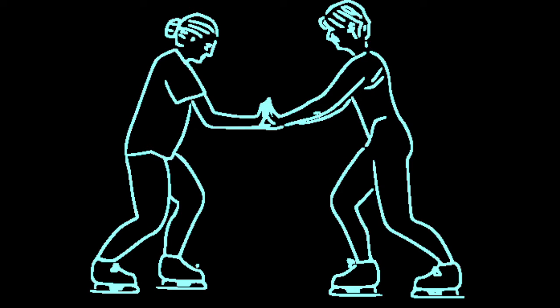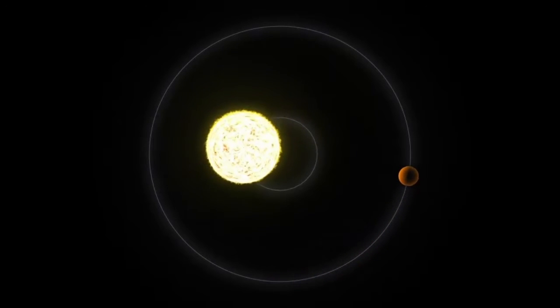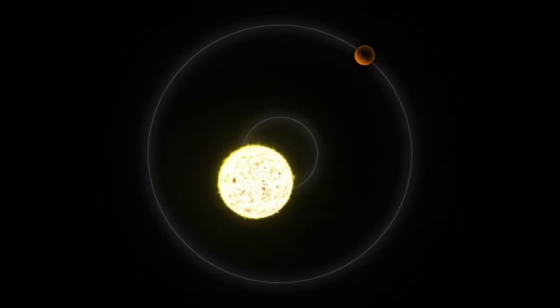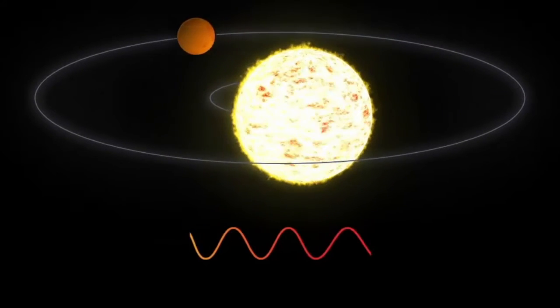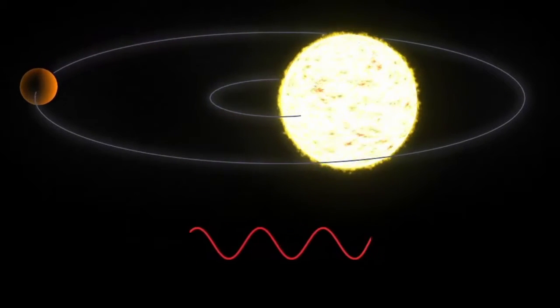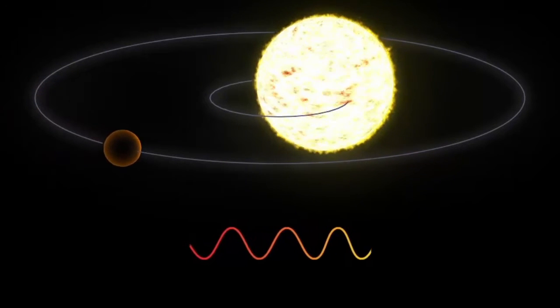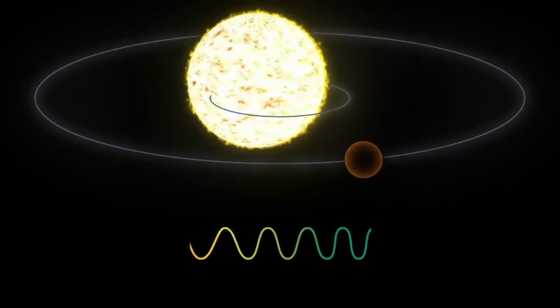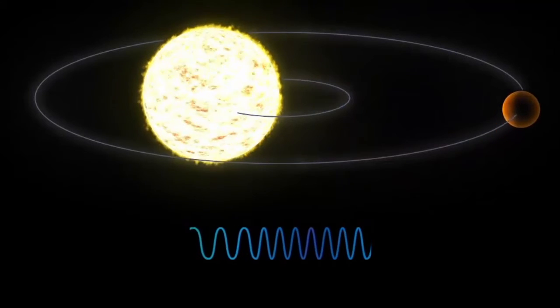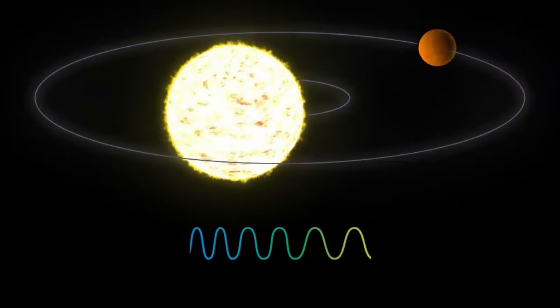Just as the gravity of stars pulls on planets, so planets also pull on their stars. Only because planets are infinitesimally small compared to their stars, their respective tugs are equally minute. Nonetheless, they are observable as very slight wobbles in the star's motion relative to Earth.